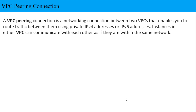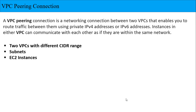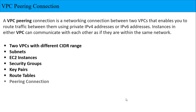Before that, let's look at the definition of VPC Peering Connection. In this video, we will create a VPC Peering Connection channel and communicate through it. The components involved are: two different VPCs with different CIDR ranges, subnets, instance launch, security groups, key pair download, route table, policy declaration, and enabling the Peering Connection.